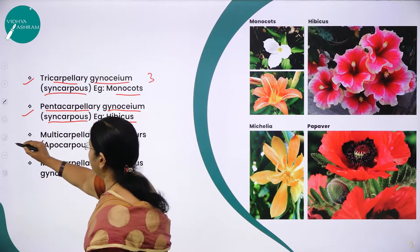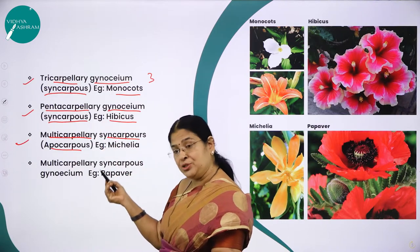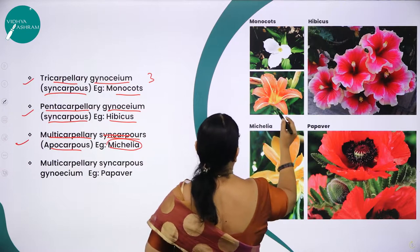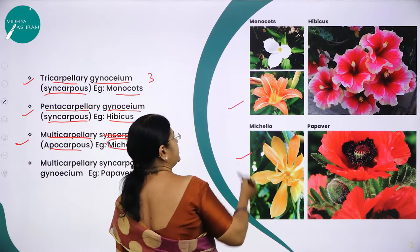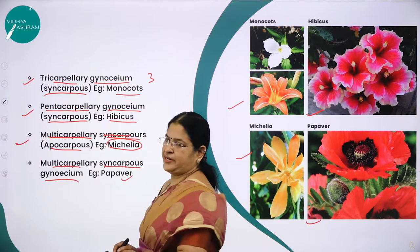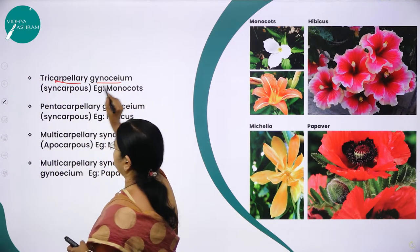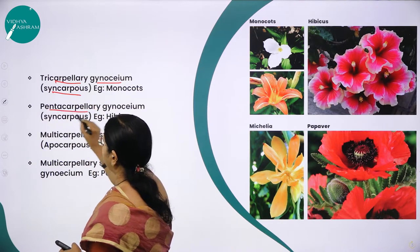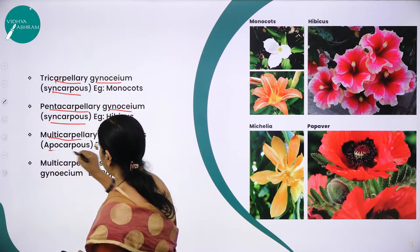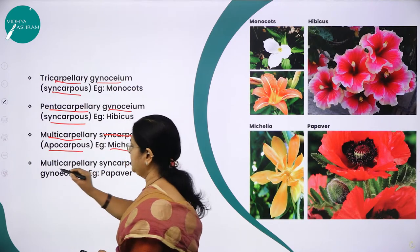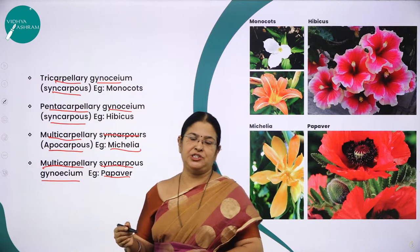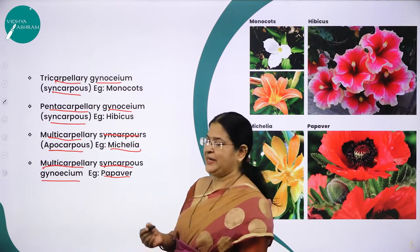Multicarpellary syncarpous gynoecium — more than two carpels, fused — the example is papaver. So all classifications are based on the number of carpels: monocarpellary, bicarpellary, tricarpellary, pentacarpellary, and multicarpellary. Here you can see in the diagram michelia as multicarpellary apocarpous, hibiscus as pentacarpellary syncarpous, and papaver as multicarpellary syncarpous.